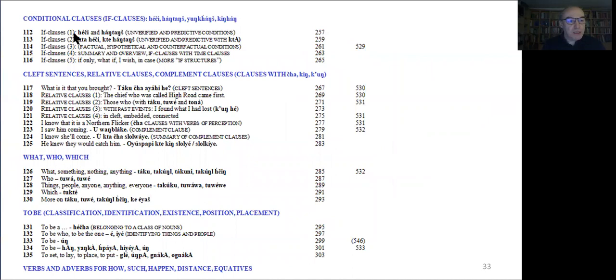The table of contents here demonstrates that units are organized into groups, and the grouping is usually based on structural properties, but in some cases also on functional criteria. Here is an example. Conditional clauses, for example, share important structural similarities, but also cleft sentences, relative clauses, complement clauses are grouped together because they have important structural similarities. But if you notice down here, a group of units on how to express to be in Lakota is based primarily on functional criteria.